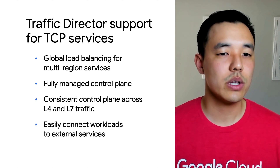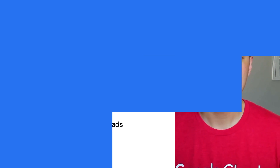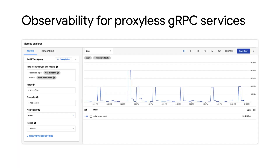You can also easily connect workloads to external services. For those of you that use Proxyless gRPC with Traffic Director and need additional visibility, now you can. With observability for Proxyless gRPC, you're able to access monitoring and tracing metrics that help you solve configuration and networking issues with your deployment. Best of all, you can export these metrics to Cloud Monitoring and Cloud Trace. You can then build dashboards and charts and even use them as a basis for automating alerts.